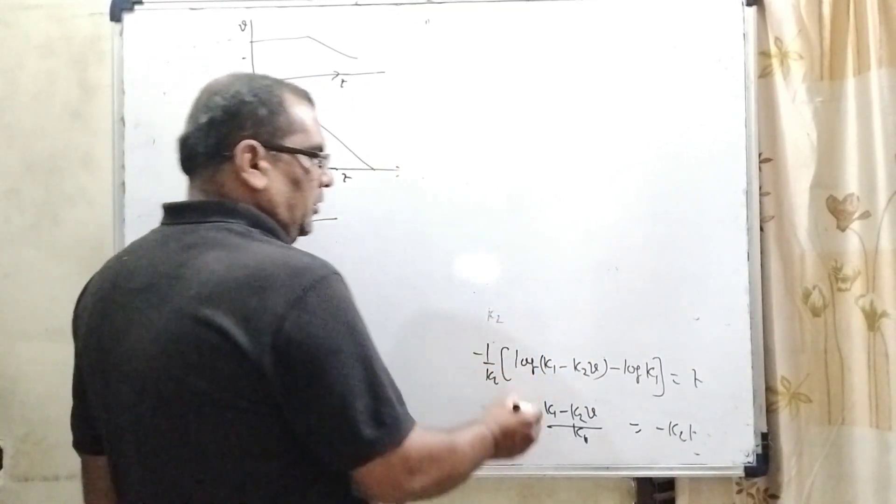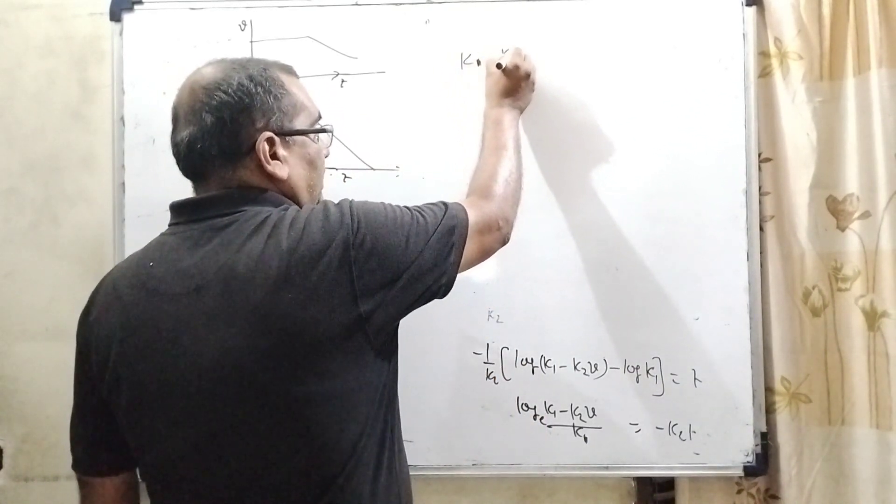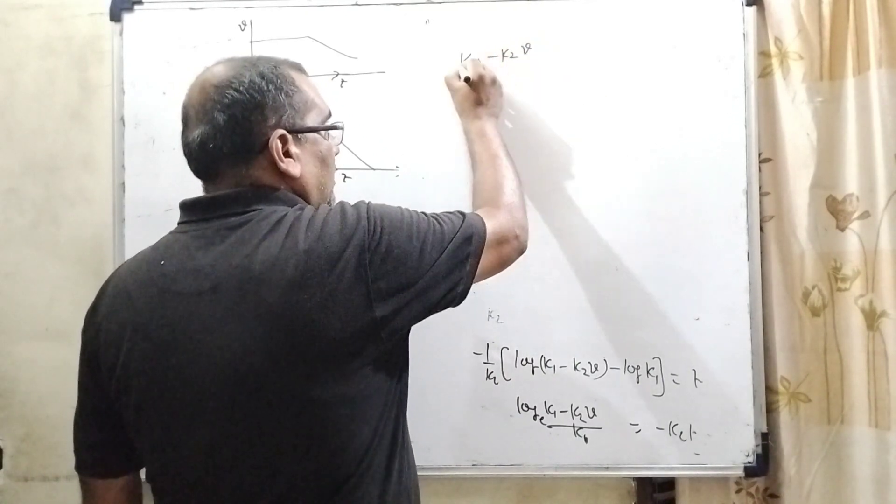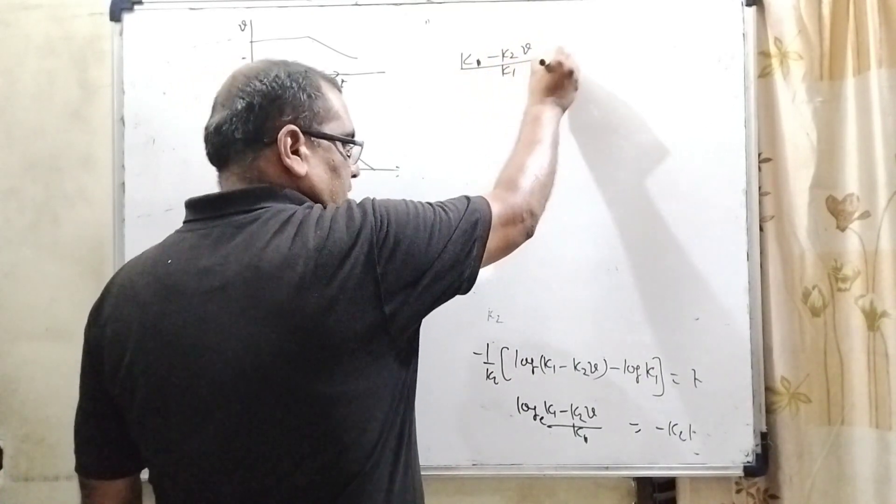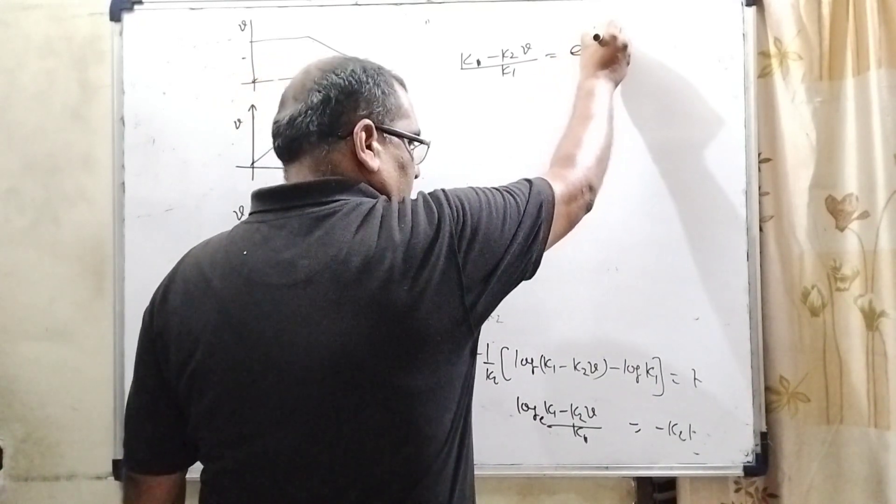Now, it can be written as K1 minus K2V upon K1 is equal to e raise to power minus K2T.